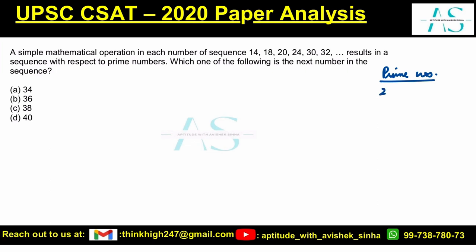The first prime number is 2, then 3, then 5, then 7, then 11, then 13, then 17, then 19, then 23, then 29, then 31, then 37. That is how you can look at different prime numbers.